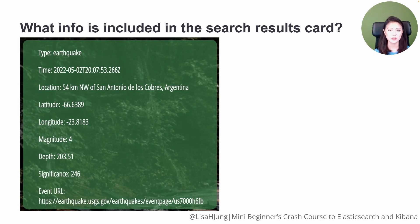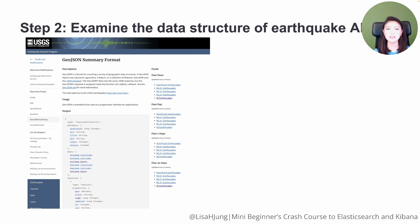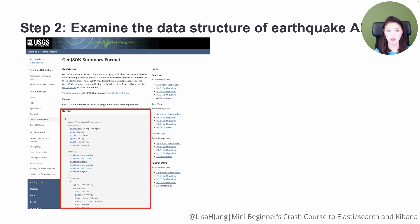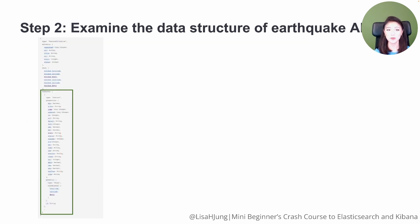The information shown on the card is what we need from the USGS API. We'll store this information in Elasticsearch in the form of documents, and each document will contain information about one earthquake. Now that we know what we want, let's examine the data structure of the earthquake API. Go to the USGS earthquake API page, scroll down to the output section, which displays a data structure of a typical earthquake object. From there, scroll down to view the field features, which contains an array of objects — each object contains information about one earthquake and lists the name and data type of fields. In step one, we determine what information we need to store in Elasticsearch, and you'll see that the object properties and geometry contain the information we're looking for.